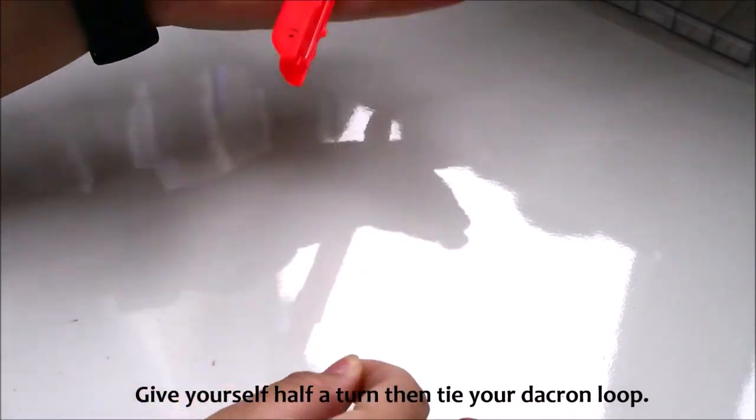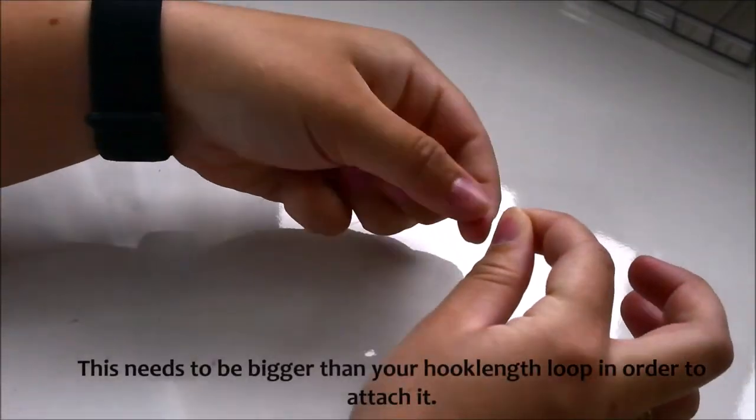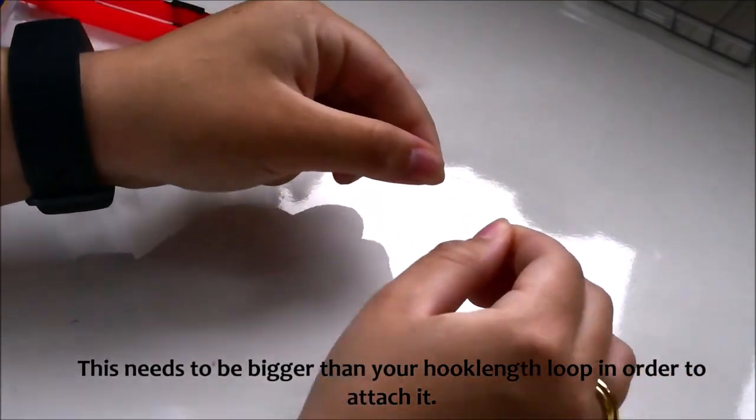Give yourself half a turn then tie your Dacron loop. This needs to be bigger than your hook length loop in order to attach it.